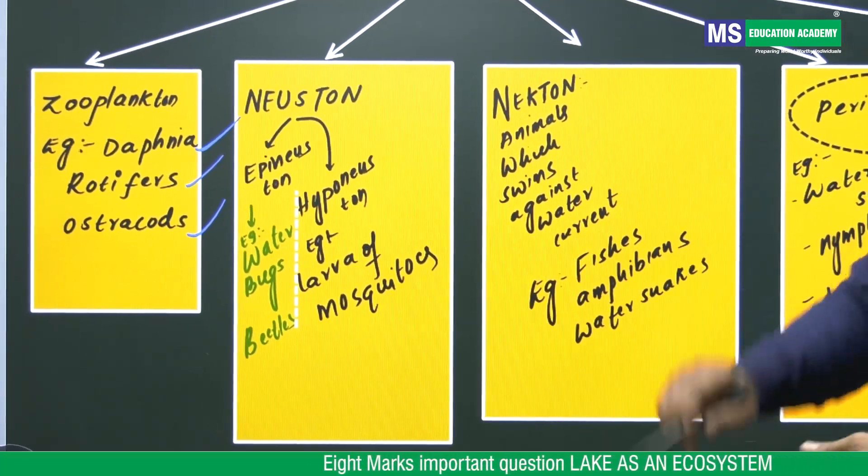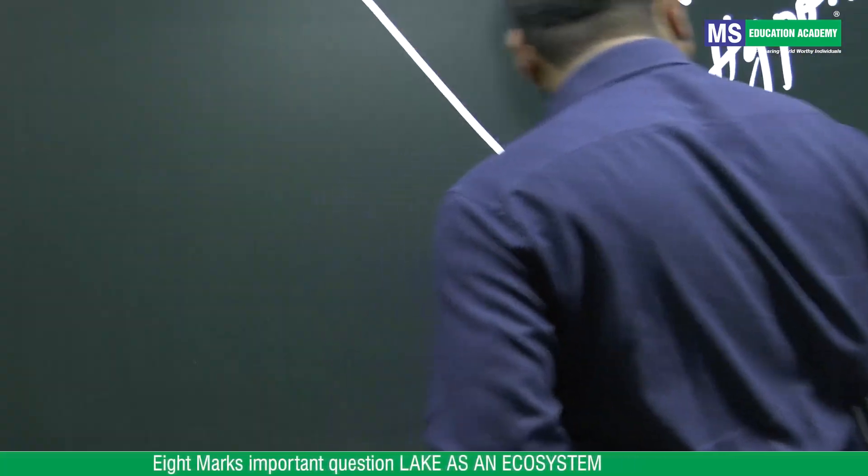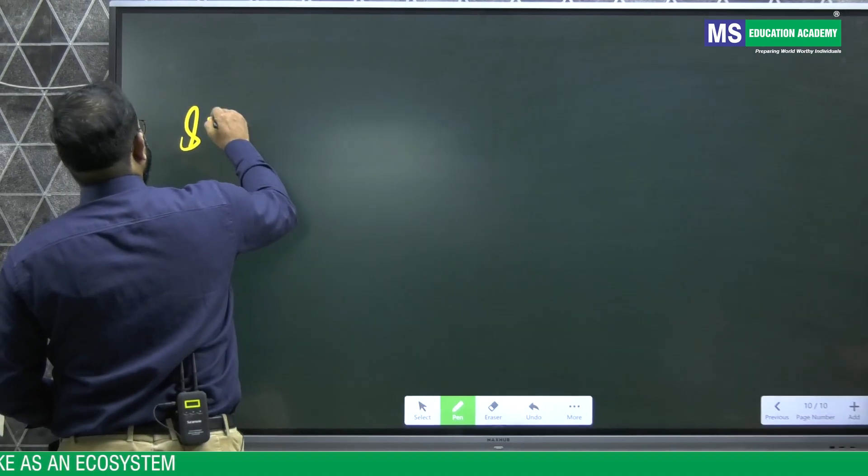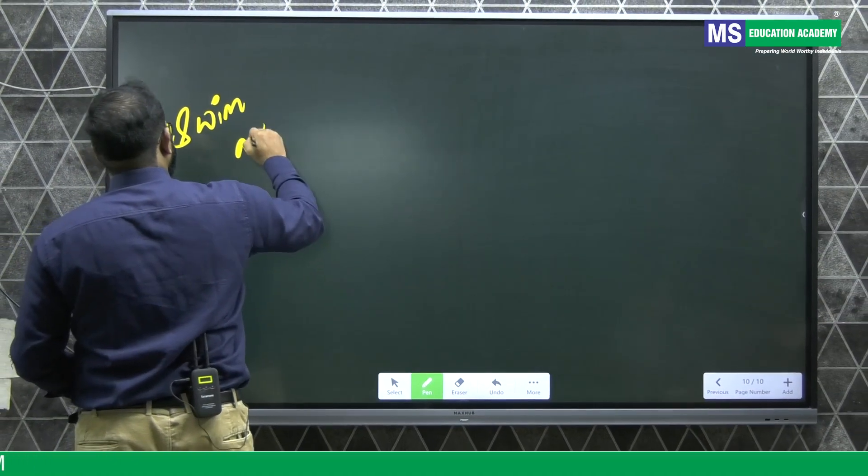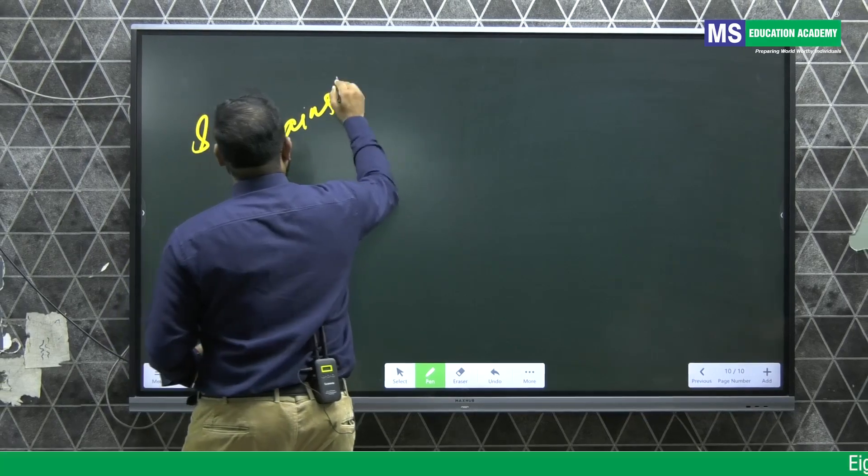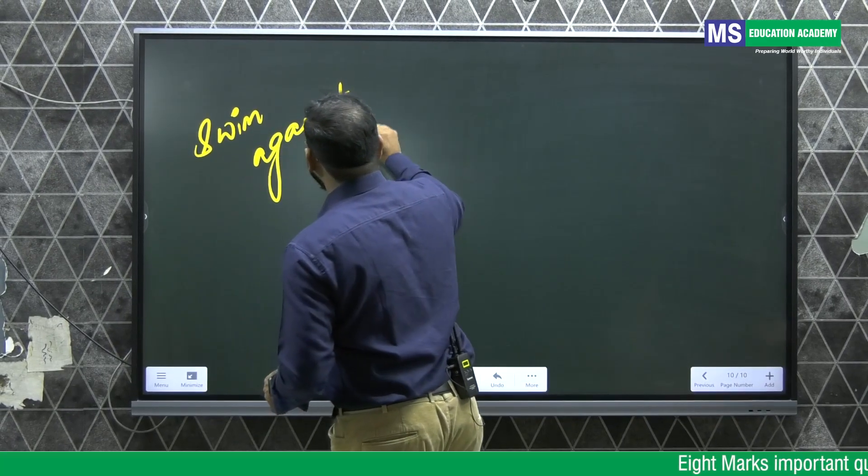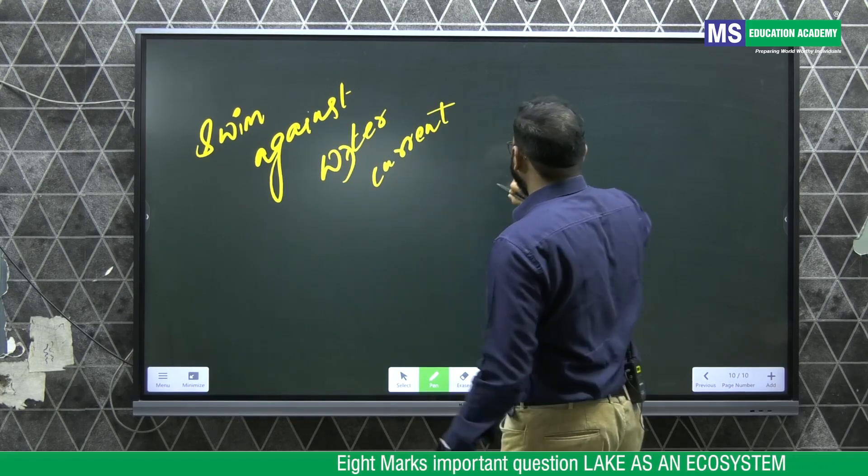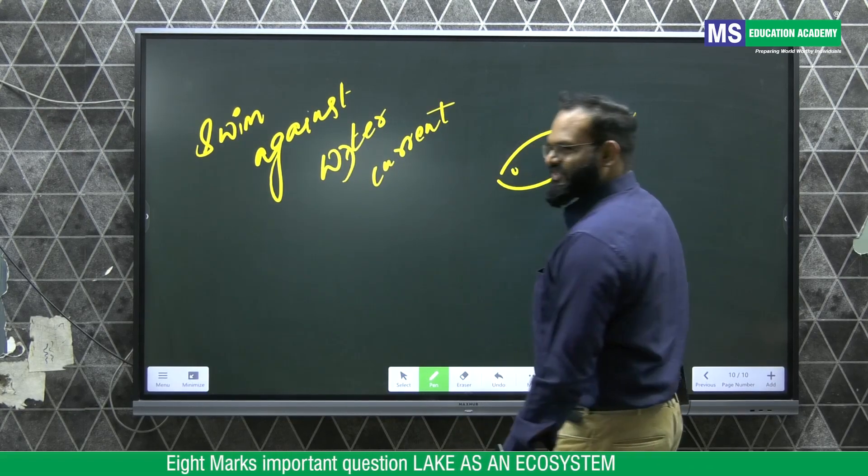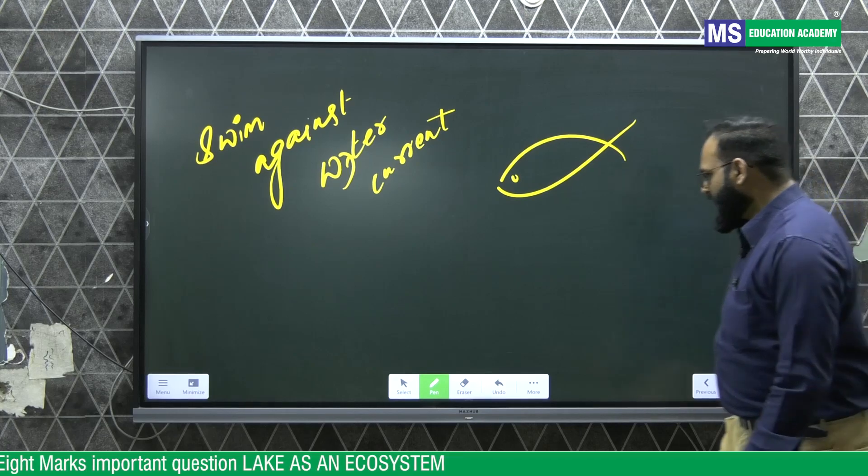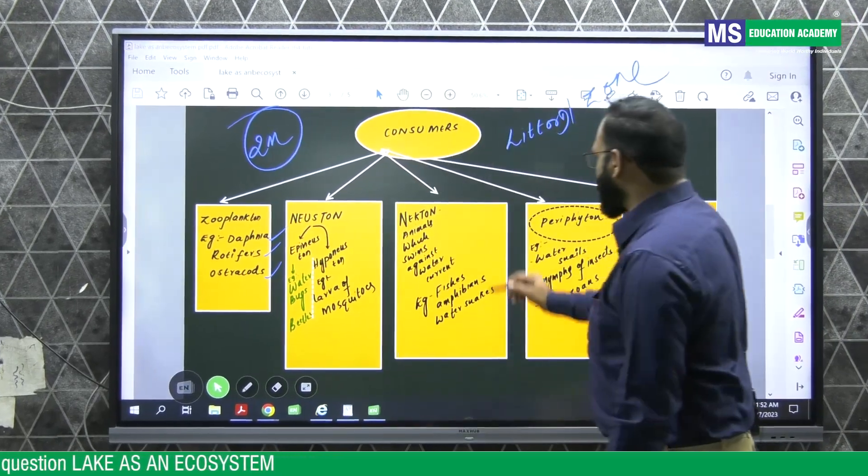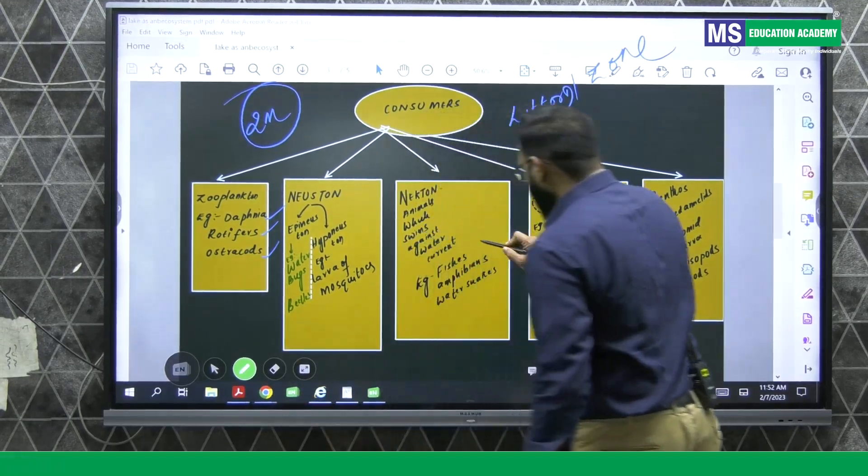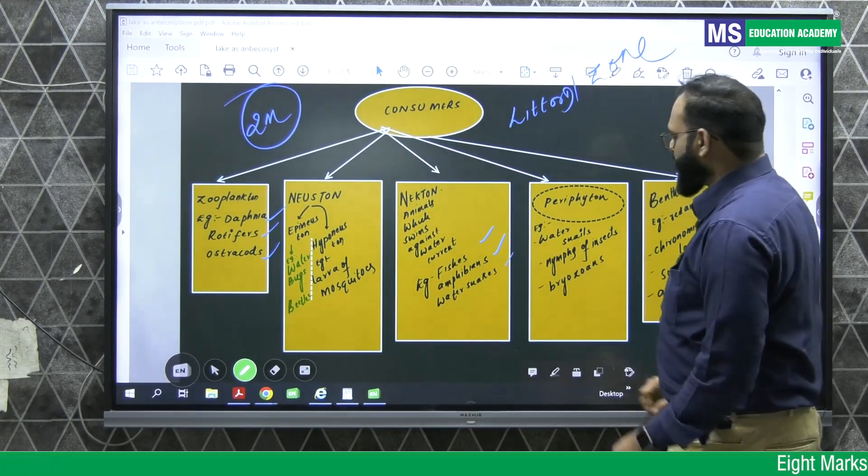And next coming to Nekton. What are Nekton? Animals which swim against water currents. This makes sense that these animals have well-developed locomotory structures. For example, like fish. Animals which swims against water currents. Example fishes, amphibians, and water snakes.